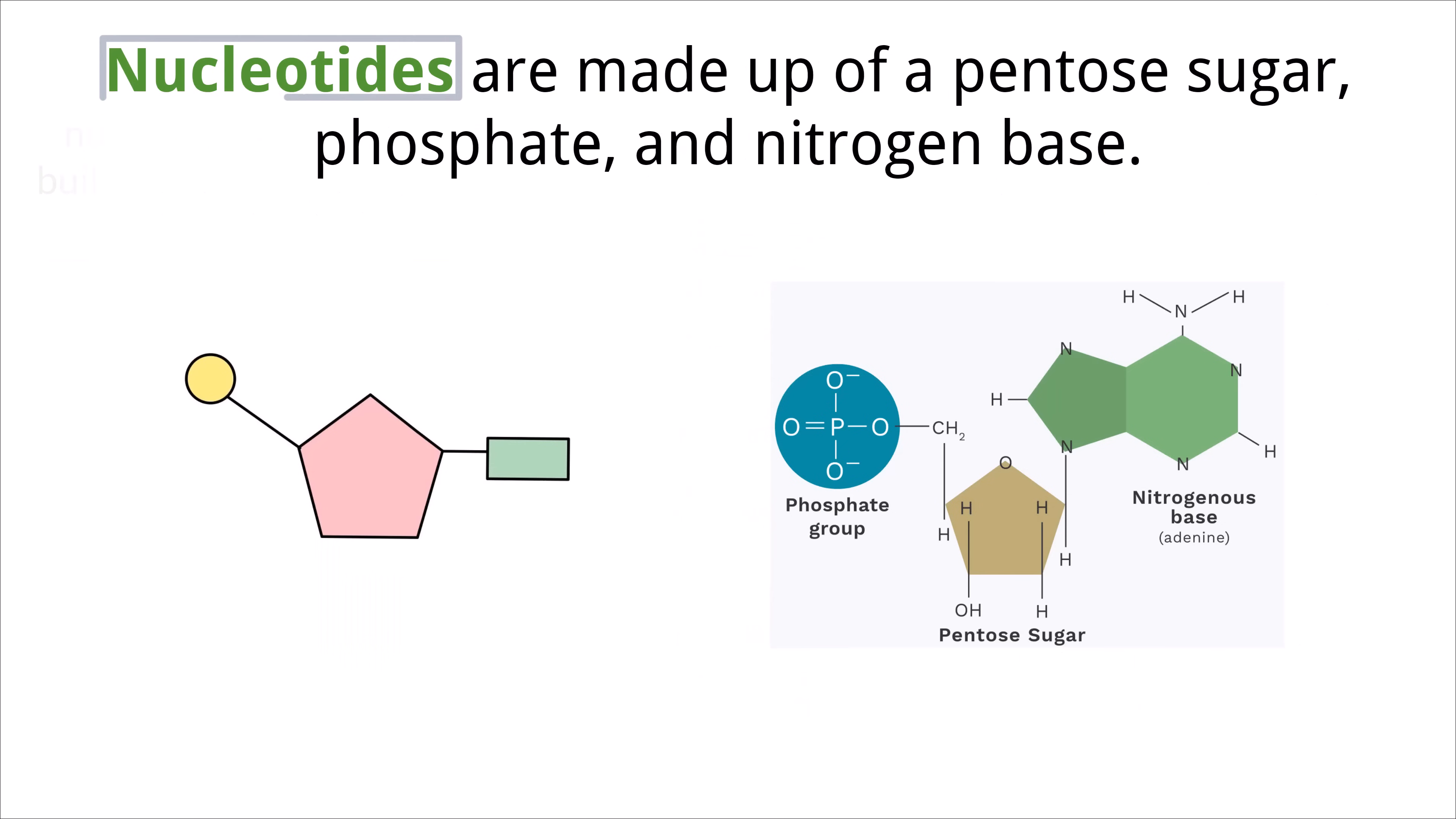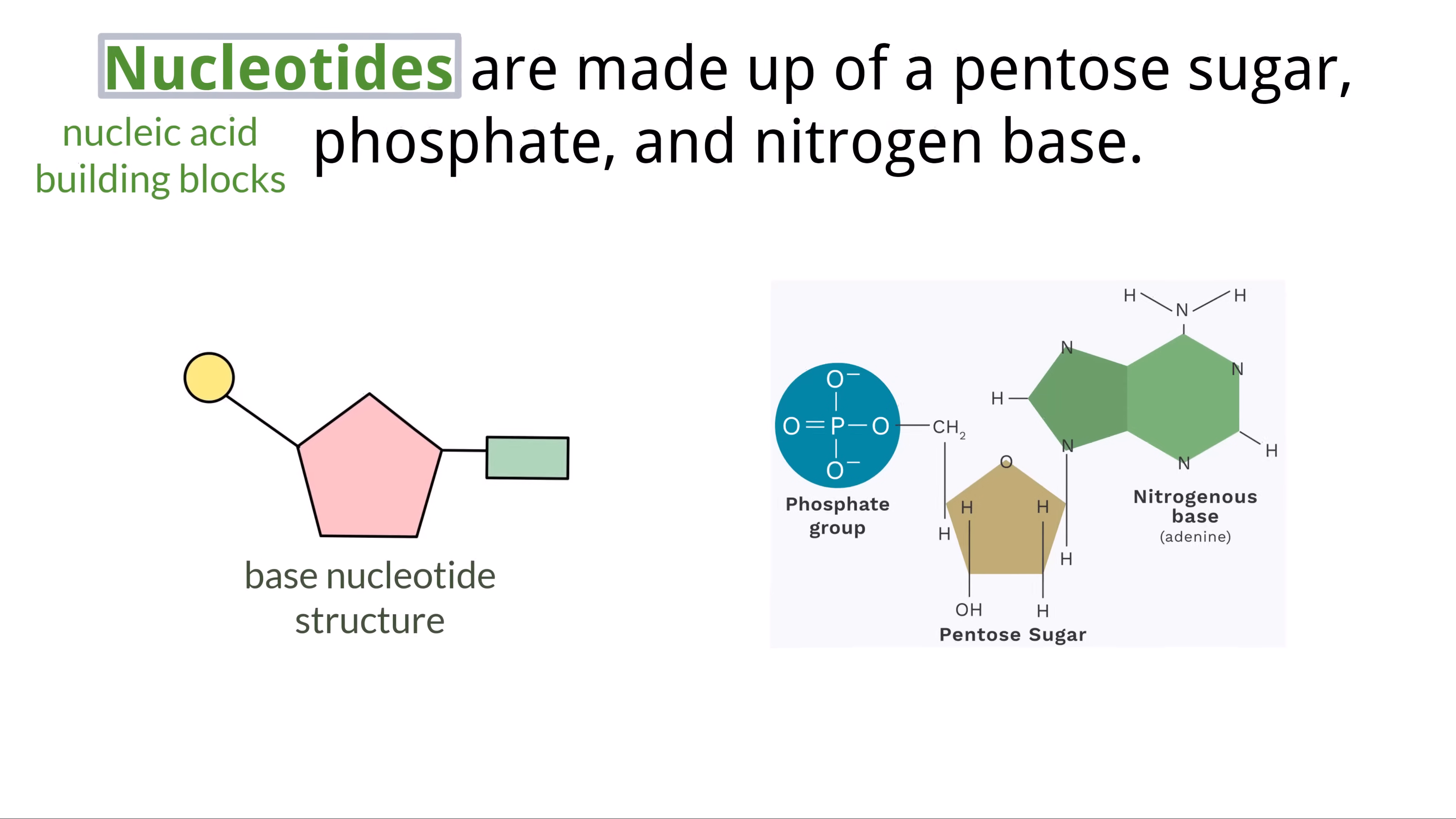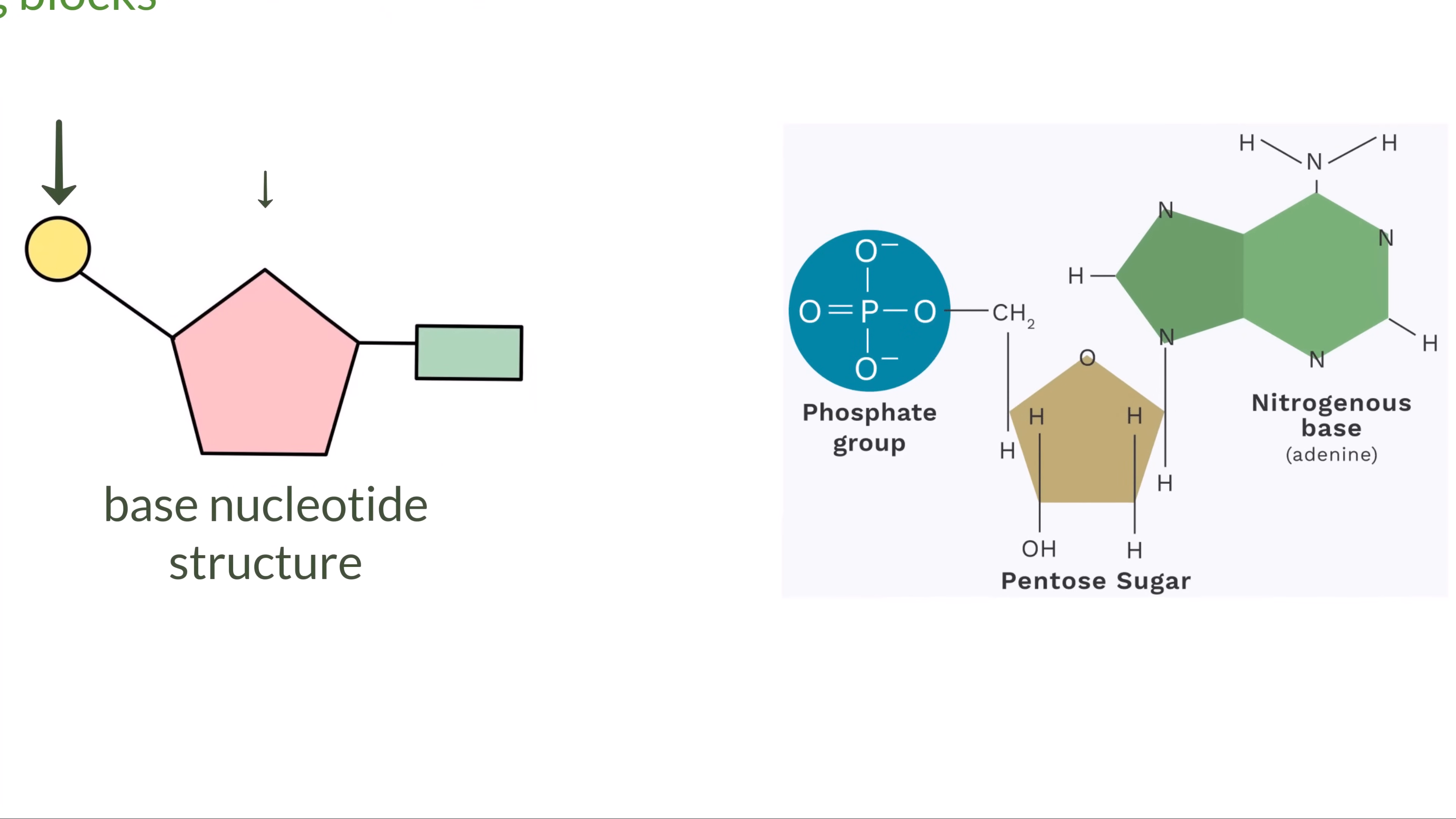Nucleotides are the building blocks of nucleic acids, and while there are different types of nucleotides that serve different functions, they do share a base structure that you need to know. This base nucleotide structure is commonly drawn with circles, pentagons, and rectangles. But know that this is only a model that represents specific components that are put together to form the nucleotide, which actually looks like this.